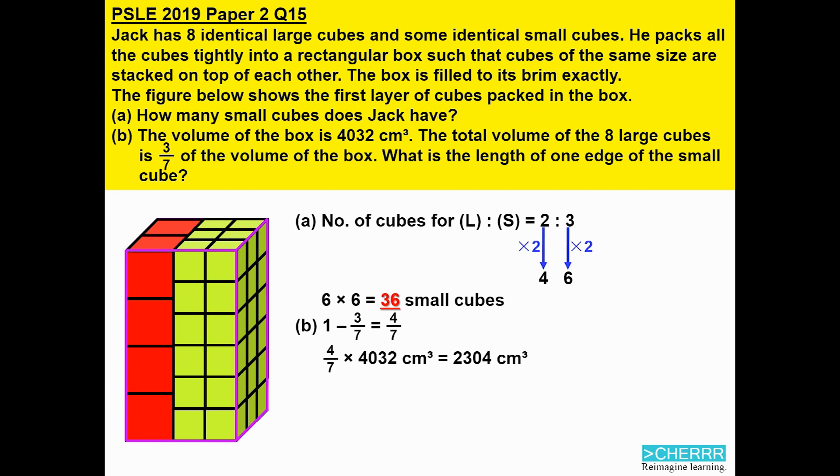Knowing that this volume is for 36 small cubes, we can now find the volume for one small cube. 2304 divided by 36 will get us 64 cubic centimeters for one small cube. Now since a cube means all the sides are the same, all we need to do is the cube root of 64 in order to find the length of one edge of the small cube, which is 4 centimeters.